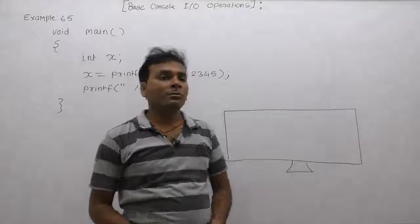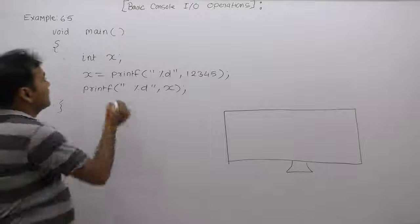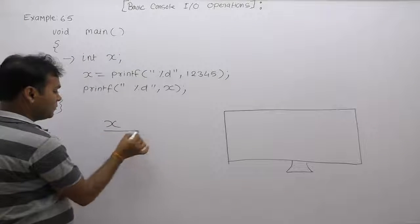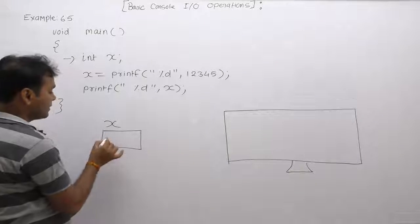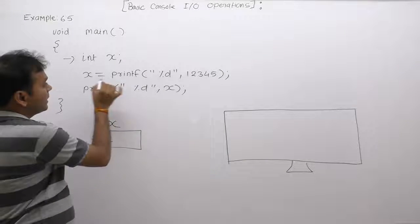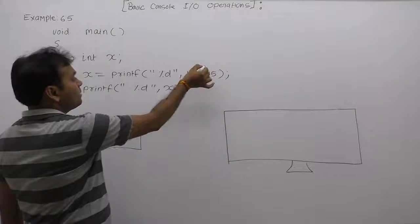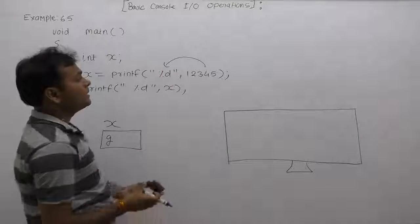Again, similar program same as the previous one. Here again we are declaring variable x, therefore allocating memory space for x with initial value as garbage. Again, according to printf, in that case in place of %d, the message is replaced or value replaced as 12345.